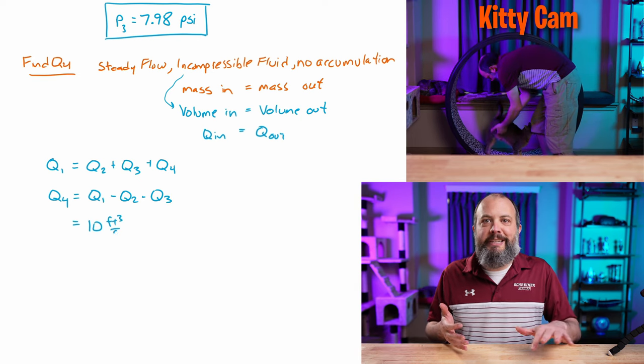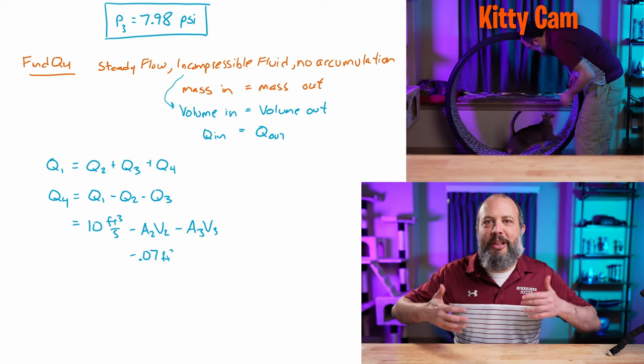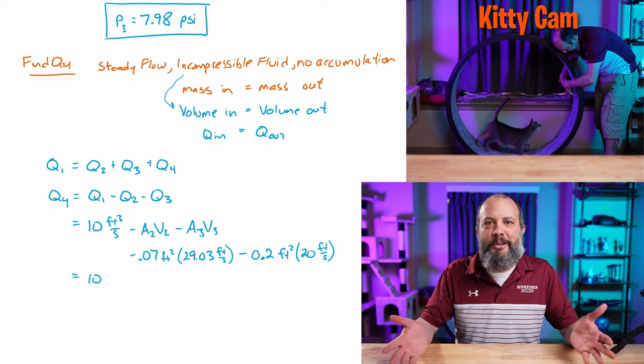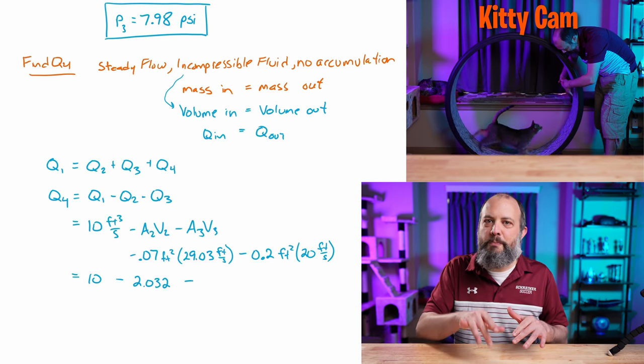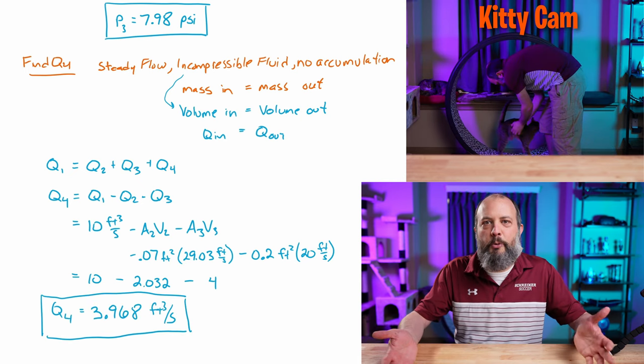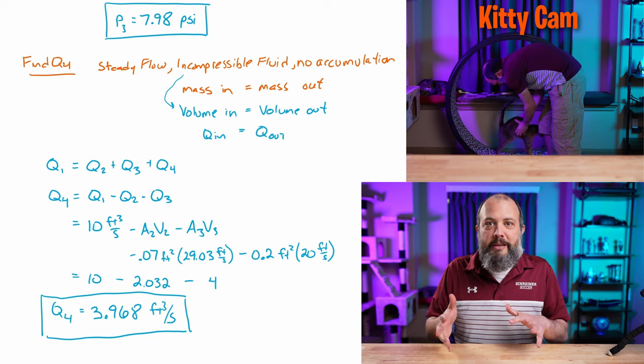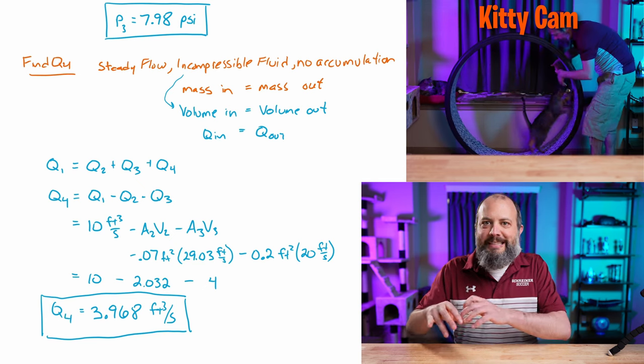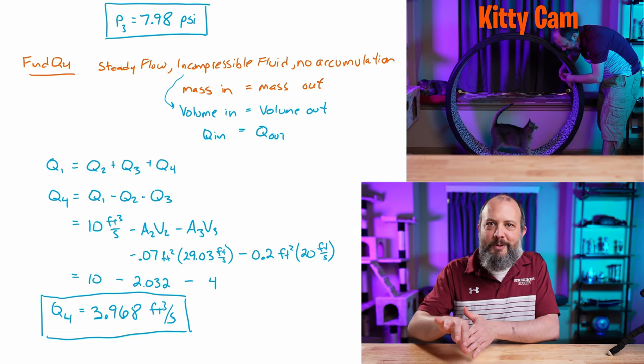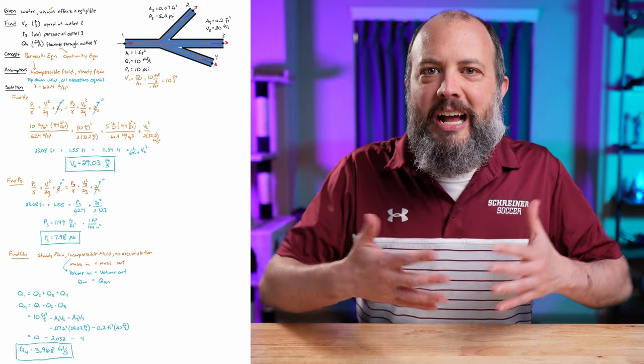And rearrange to solve for q4 is equal to q1 minus q2 minus q3. So we're given flow rate at one, that's 10 cubic feet per second. We're given both of the cross sectional areas for points two and three and either given or have already found those two velocities. So plug in all the numbers. 3.968 cubic feet per second is the volumetric flow rate through point four, where when combined with the four and the 2.03 means that all three outlets add up to 10.